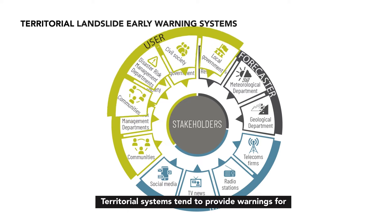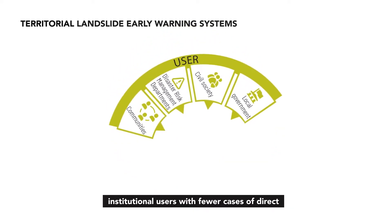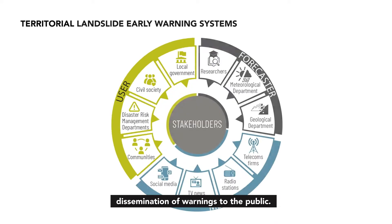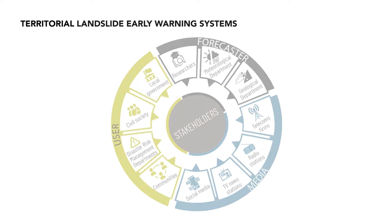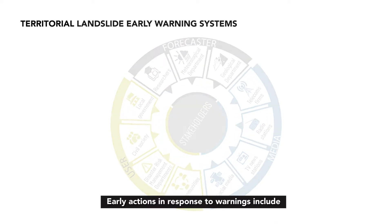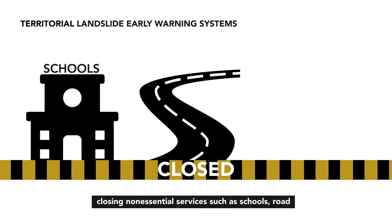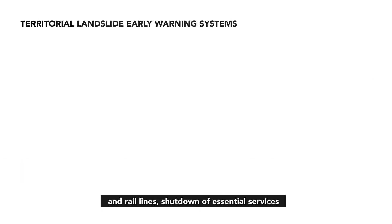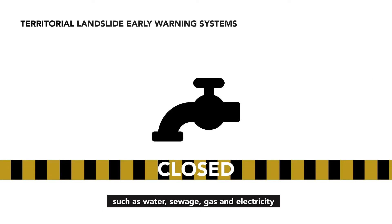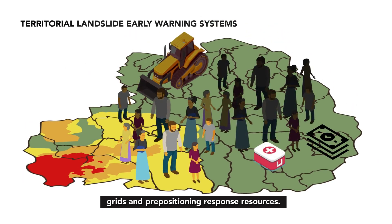Territorial systems tend to provide warnings for institutional users, with fewer cases of direct dissemination of warnings to the public. Early actions in response to warnings include closing non-essential services such as schools, road and rail lines, shutdown of essential services such as water, sewage, gas and electricity grids, and pre-positioning response resources.